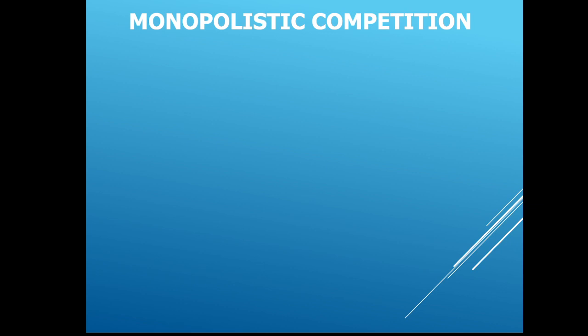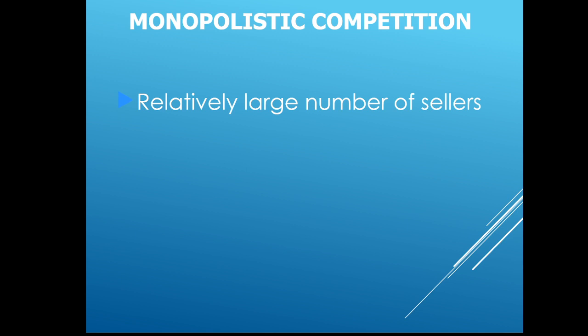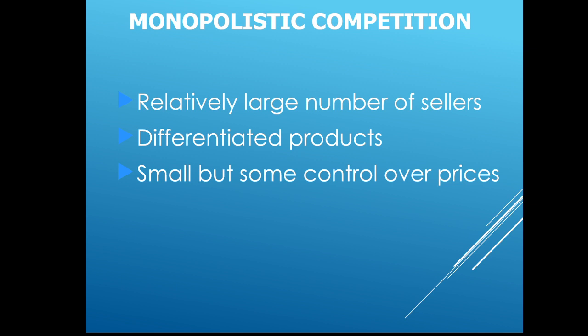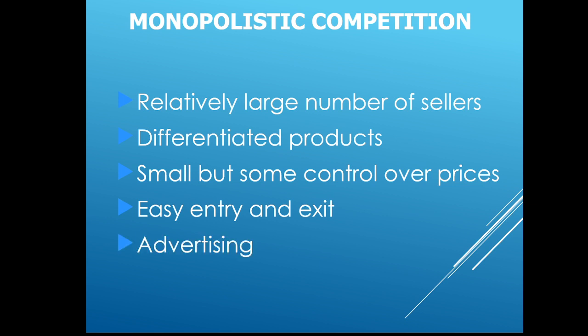We are on to the third market structure known as monopolistic competition. Let's go through some of the characteristics like we've done with monopoly and perfect competition. First, the number of sellers: there is a relatively large number of sellers. The product type is a differentiated product. There is some control of the price. It is easy to enter and to exit, and there is a need for advertising.